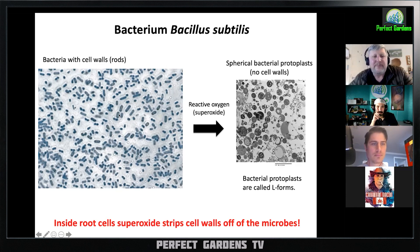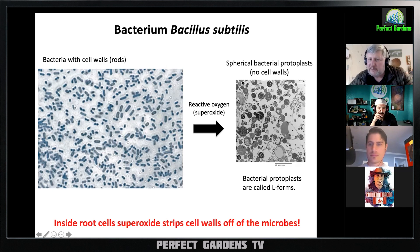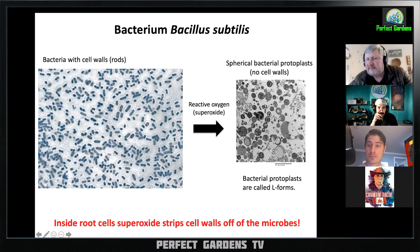Here's just a picture showing bacterial rods with their cell walls — that's what they look like in the soil. When they go into the root cell, they get hit with superoxide and lose their walls. Now they're these spherical things — you can see them to the right. Those are the protoplasts.